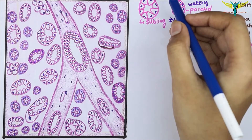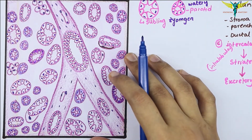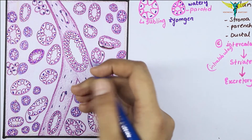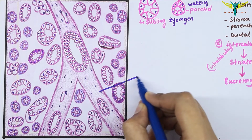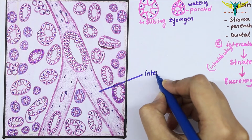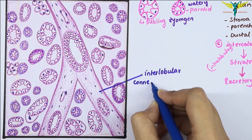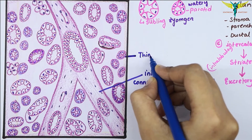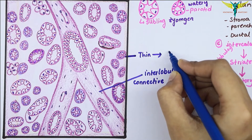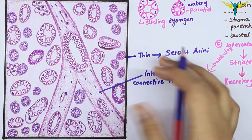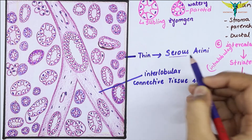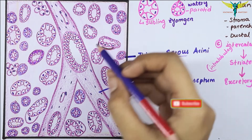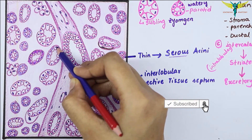The submandibular gland is the mixed type of salivary gland and contains predominantly serous acini with some mucous acini. This septa is the interlobular connective tissue septum. The serous acini, which are filled with thin watery material, are always stained dark in hematoxylin and eosin stain, with nuclei placed at the base and rounded in shape.